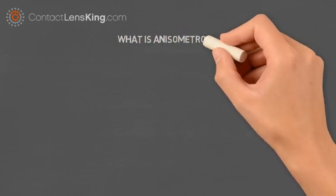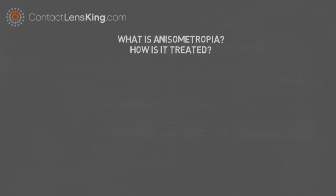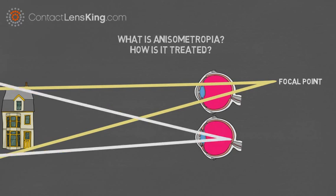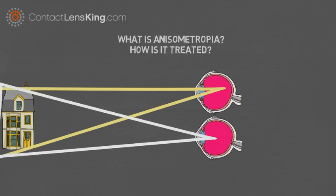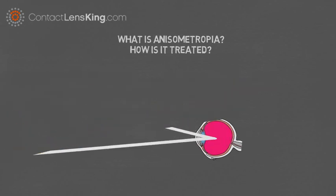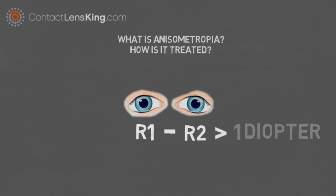What is anisometropia, and how is it treated? Anisometropia is a condition, described as a disorder, where the two eyes have different refractive powers. This disorder can cause each eye to experience nearsightedness, farsightedness, or a combination of both. A person is considered to suffer from anisometropia if the refractive power of their eyes differ by one diopter or more.